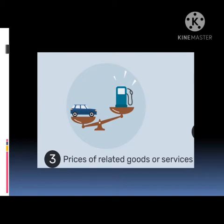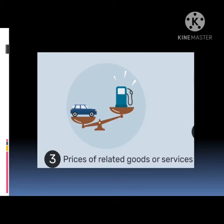The fourth determinant is taste of customers. When the public's desires, emotions, or preferences change in favor of your product, so does the quantity demanded. Likewise, when taste goes against it, that depresses the amount demanded.